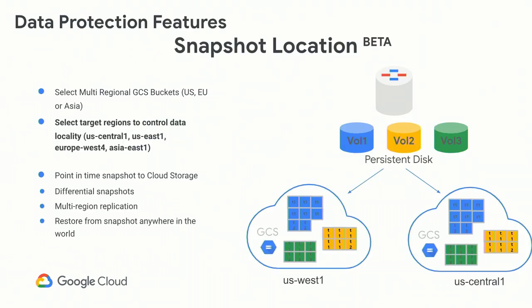Snapshot location is a feature currently in beta, designed for customers focused on data locality. If you're taking a snapshot and are concerned about data not leaving certain localities — for compliance, taxation, or corporate purposes — you can control precisely where your snapshot is stored. For example, you can say a snapshot taken from US Central can go to US East 1, or stays within a multi-regional US bucket. This gives you DR with snapshots while controlling data locality.